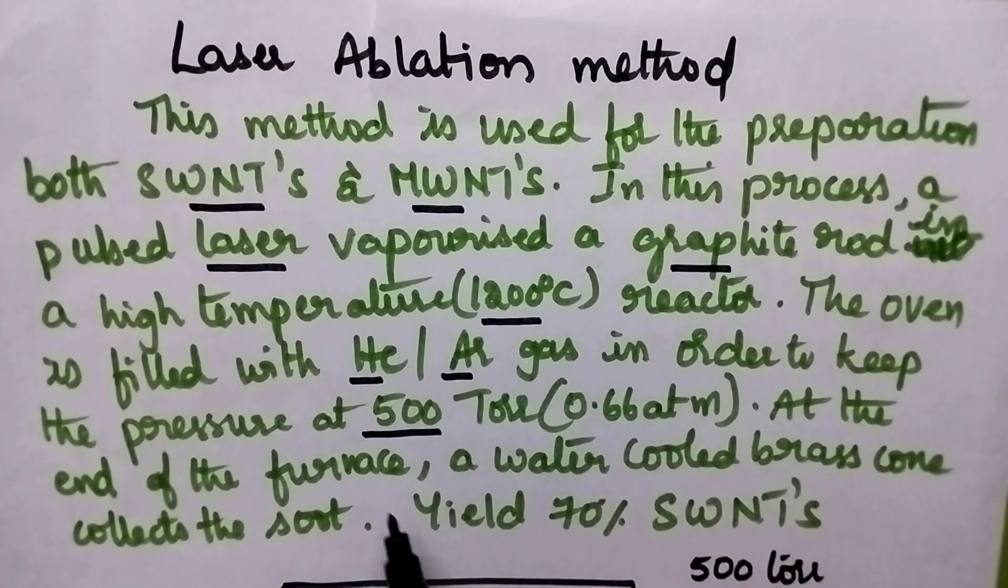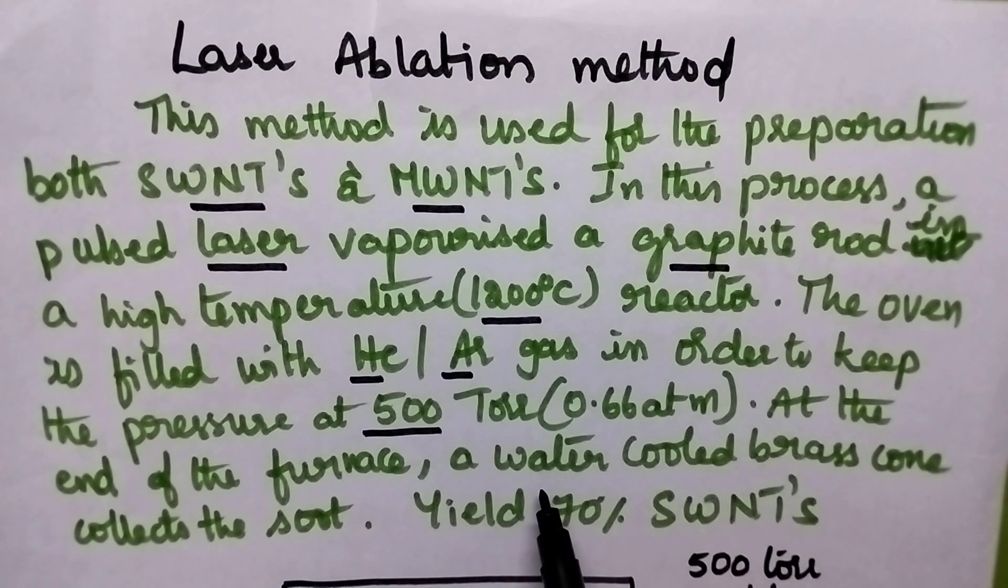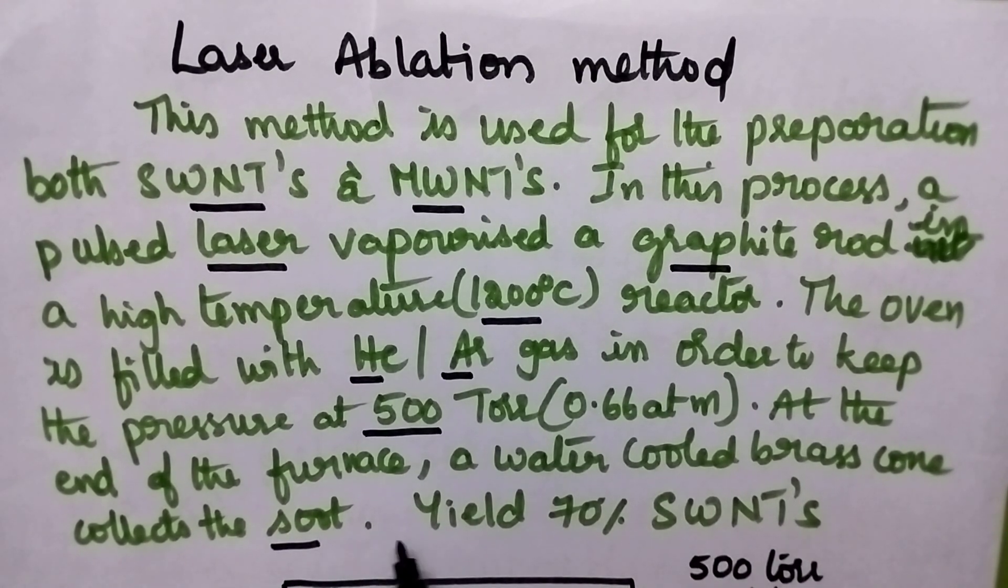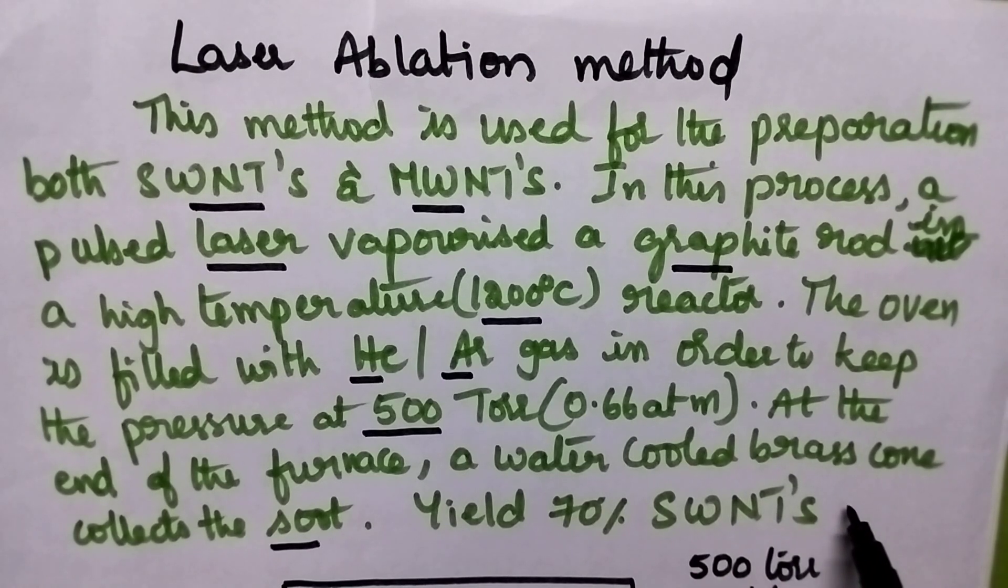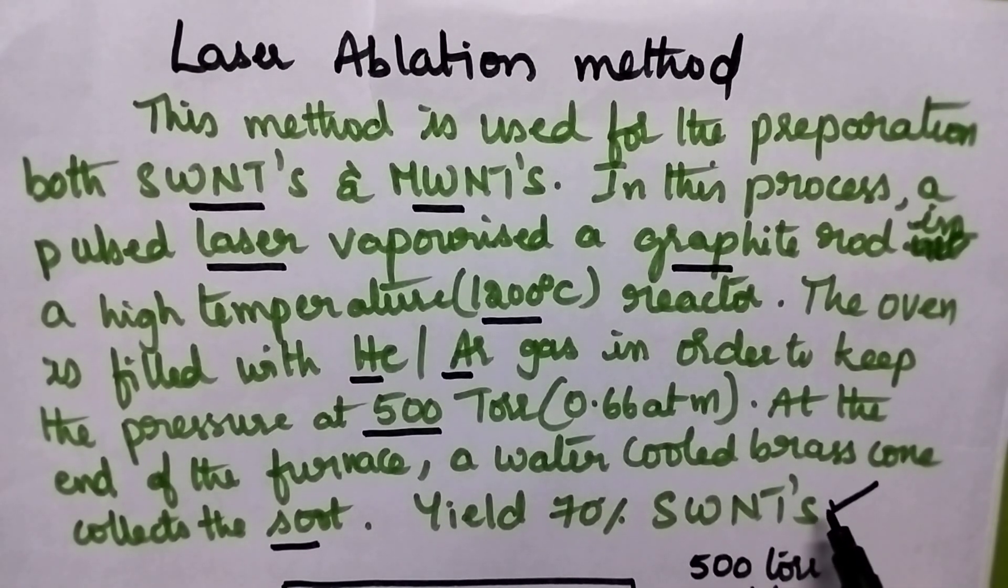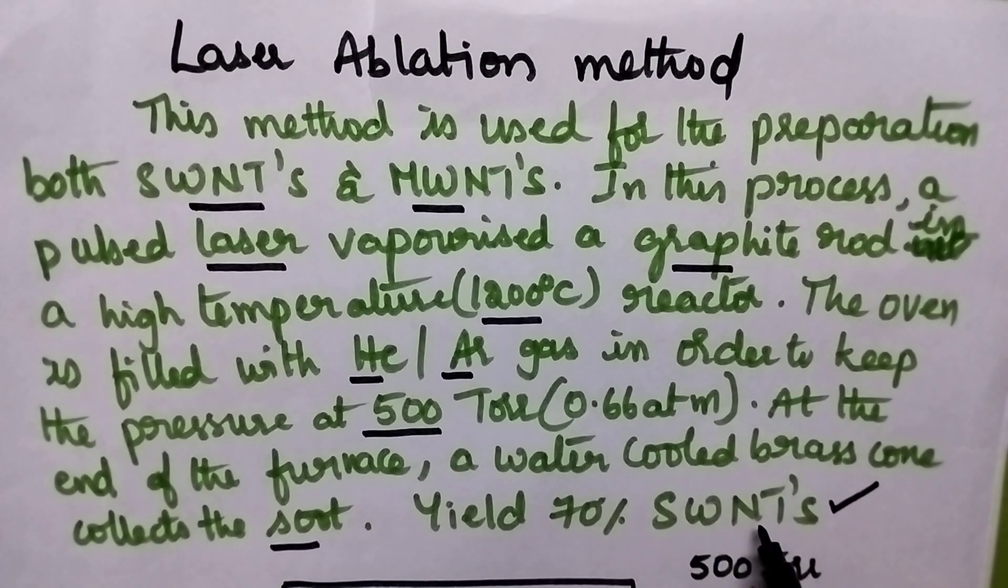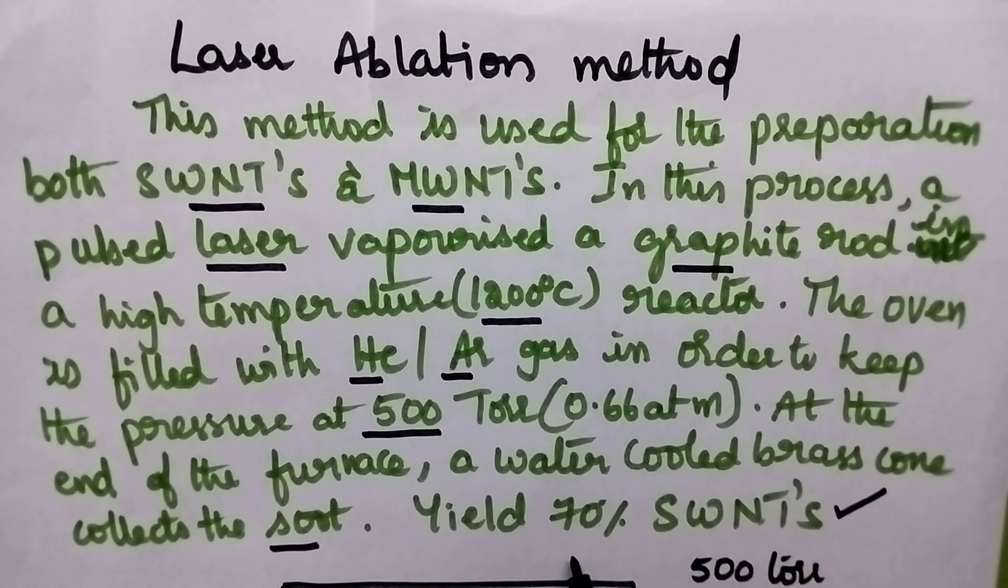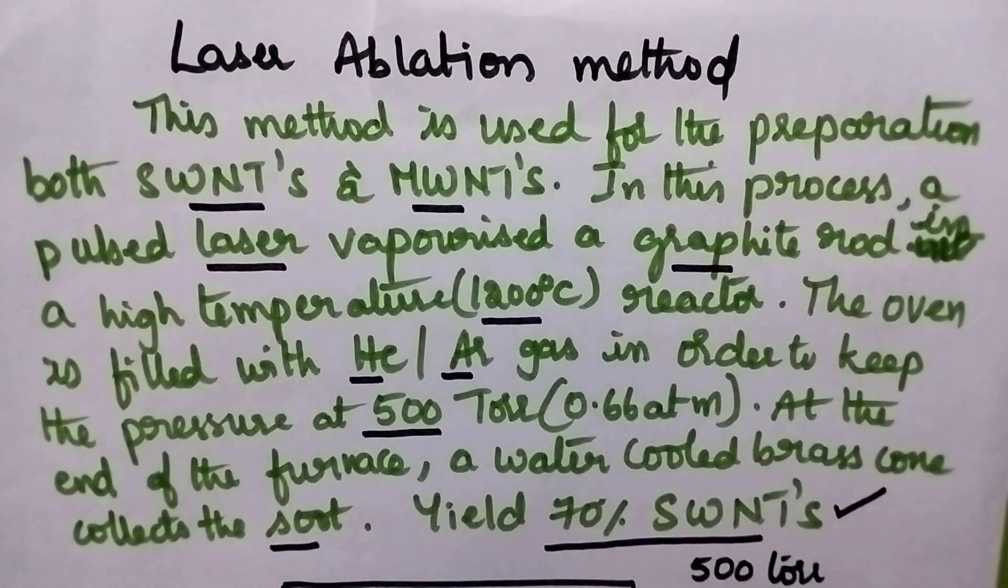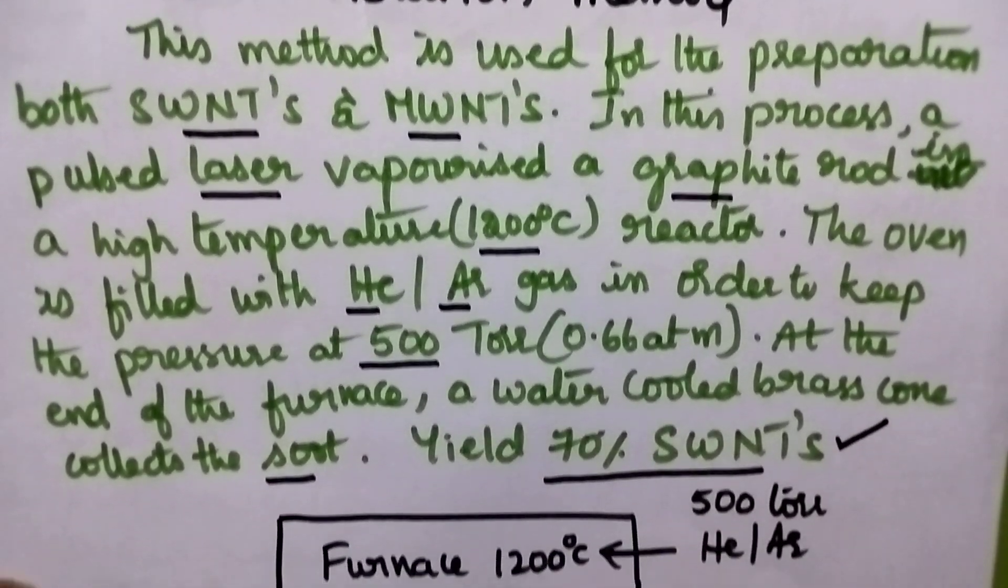At the end of the furnace, a water-cooled brass cone collects the soot. That soot consists of both single-walled and multi-walled carbon nanotubes, but majorly single-walled carbon nanotubes are obtained. 70% of the product from this laser ablation method is single-walled carbon nanotubes.